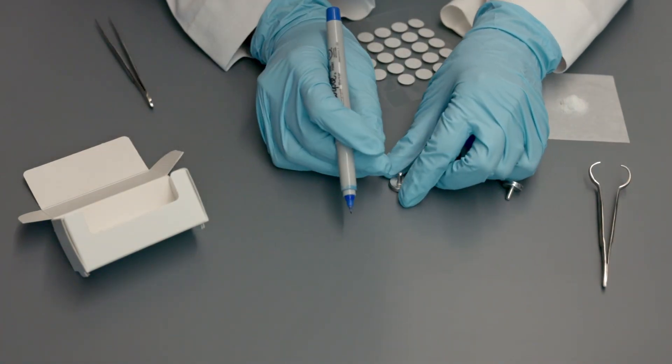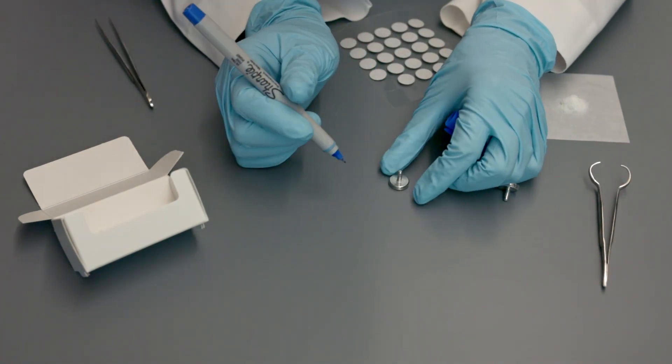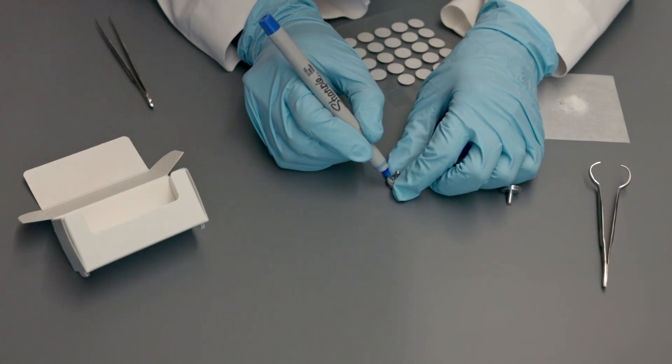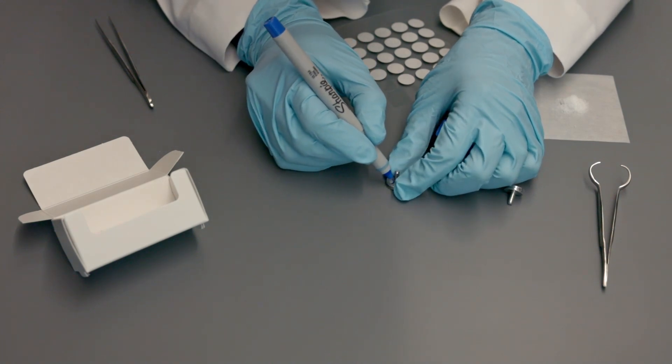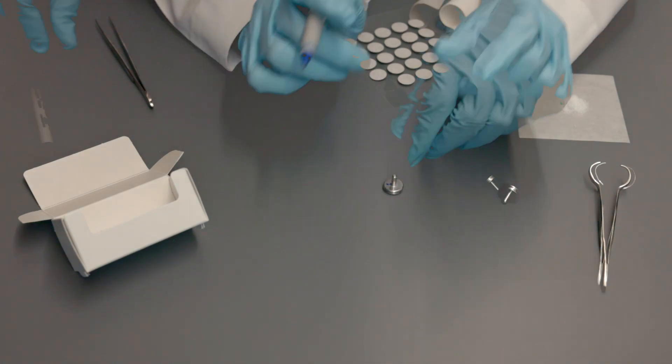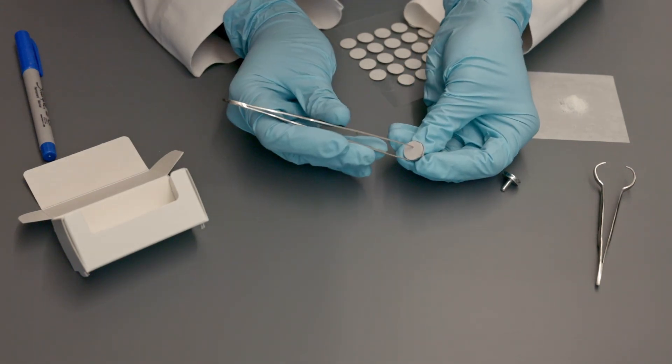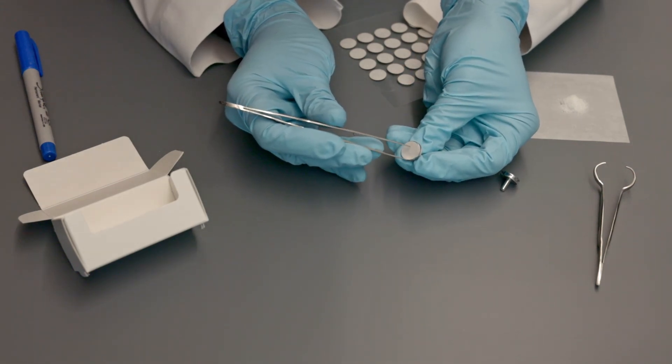Label the mount with the sample name on the bottom of the mount. Carefully remove the top liner to expose the conductive carbon tape.